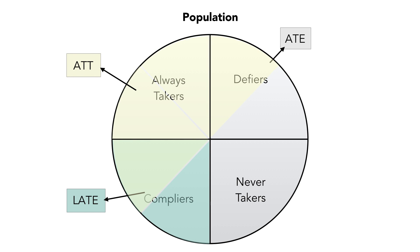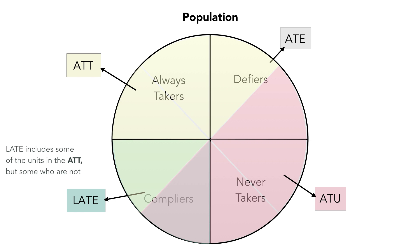If we did it for the untreated people, that gives us the average treatment on the untreated, or ATU. You can see that the average treatment on the treated includes some of the people who are in the local average treatment effect, so there's some overlap, but it doesn't include everyone in the local average treatment effect. Conversely, the local average treatment effect includes some people in the overall average treatment effect, but also some others who are not.